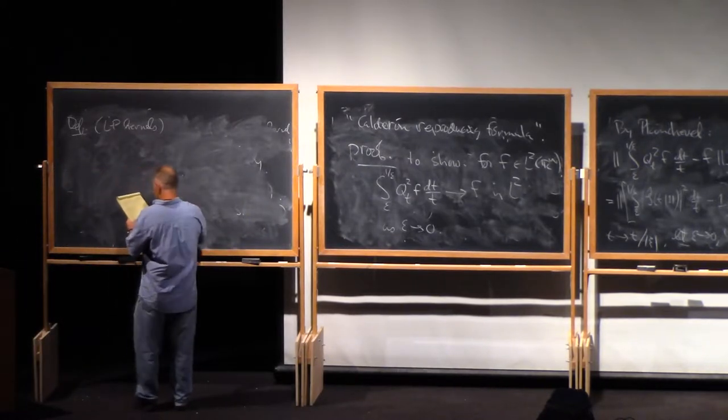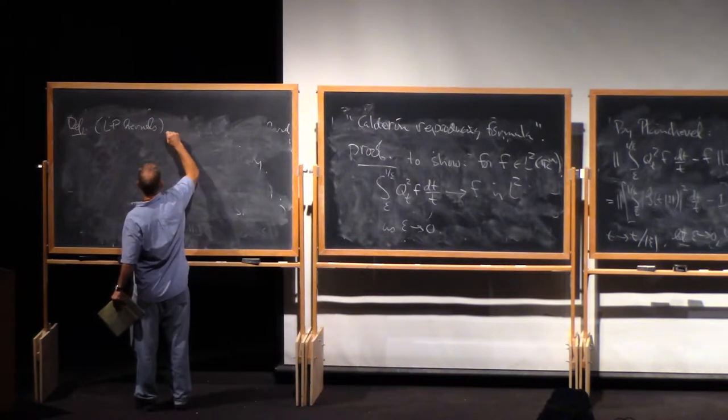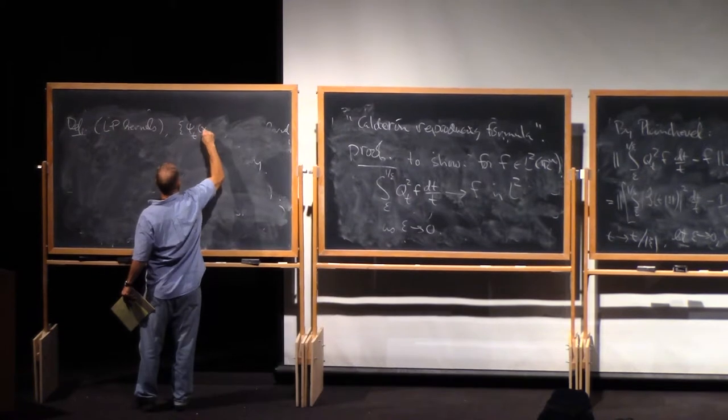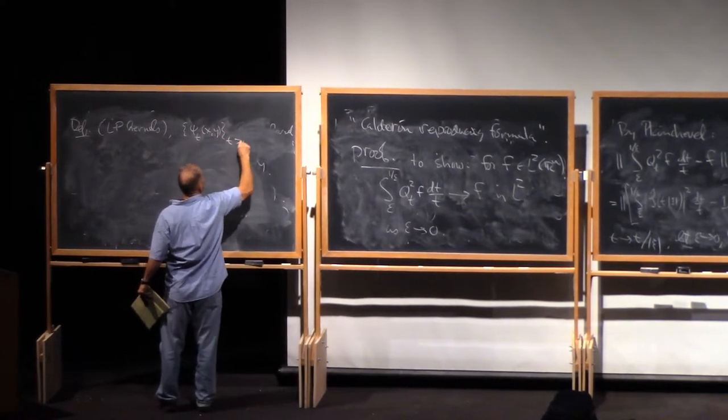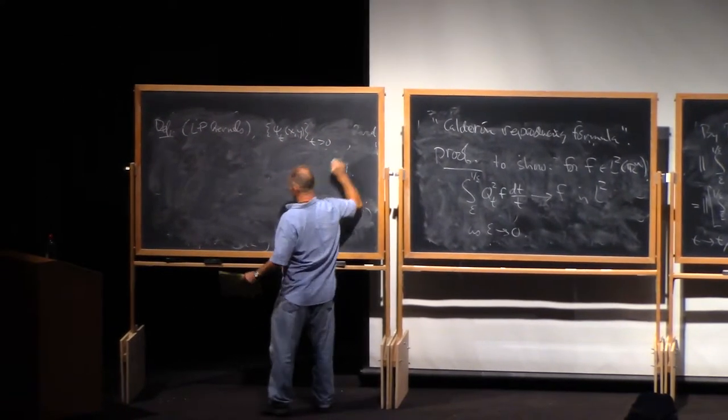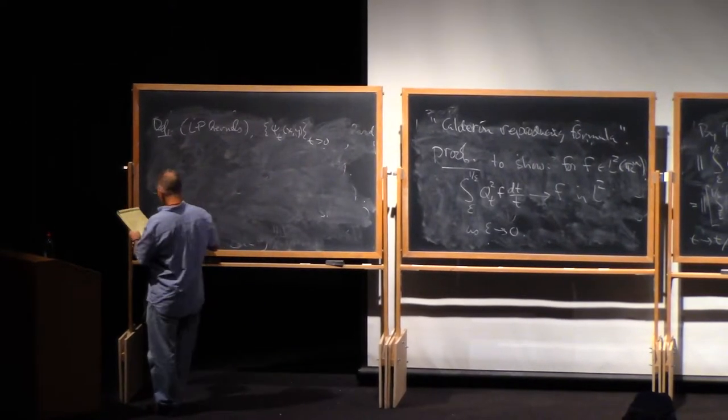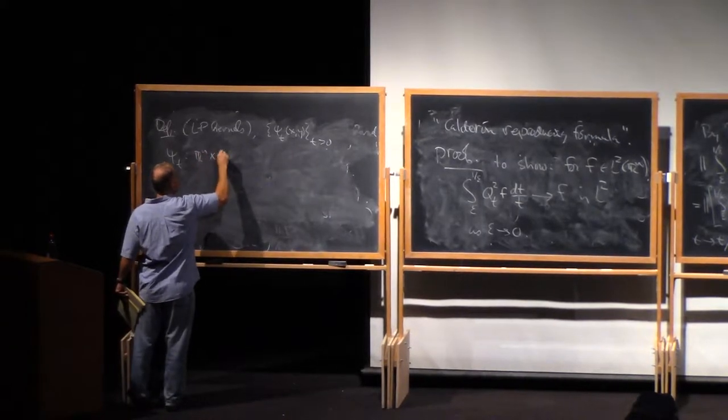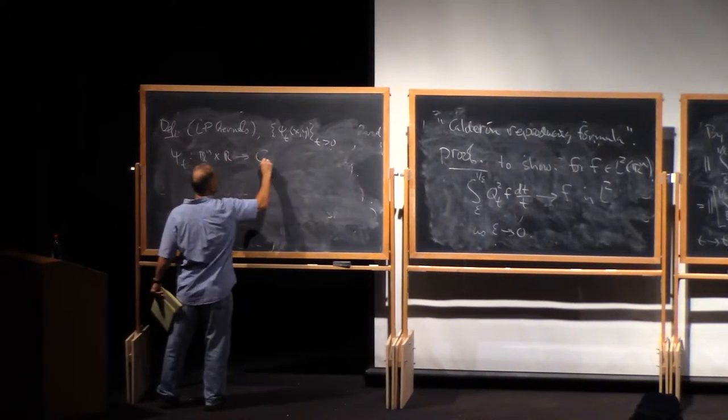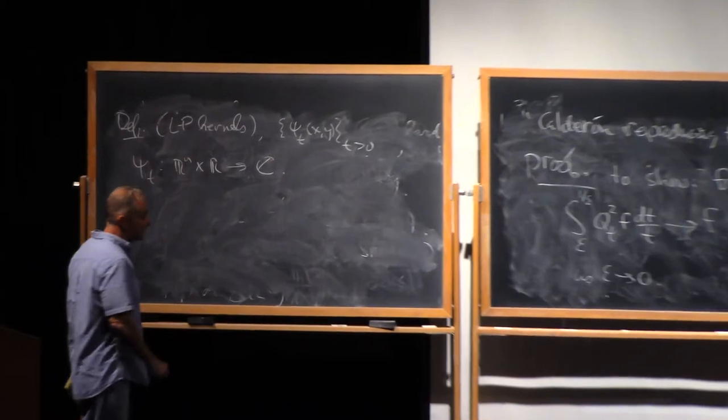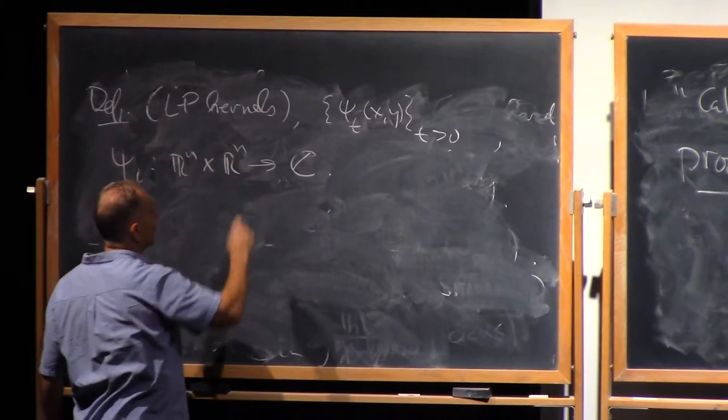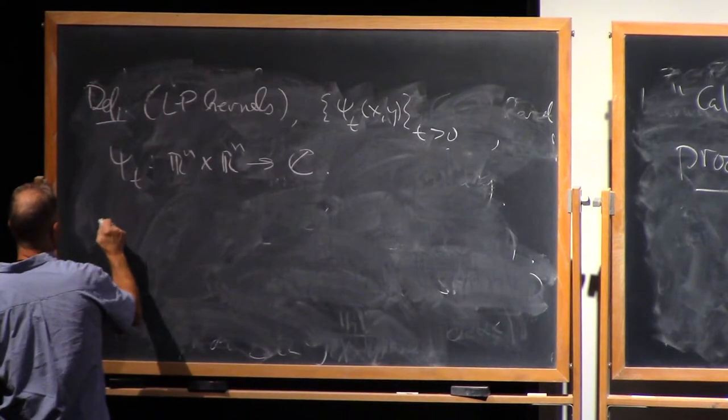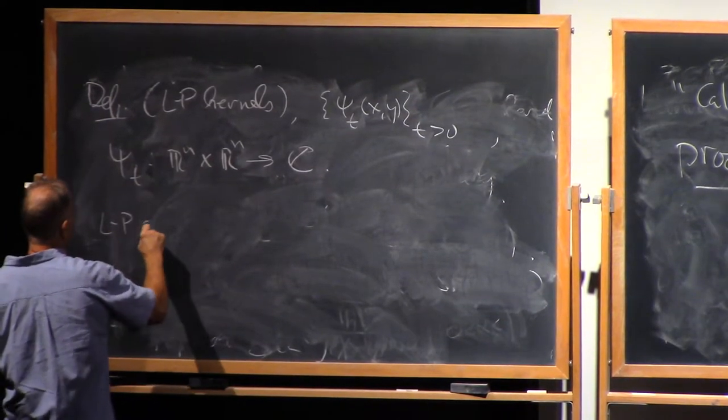So, we're gonna be talking about a family of operators, or family of kernels, psi_t of xy, indexed by some positive parameter t. Psi_t is gonna map Rn cross Rn into the complex numbers. And we're gonna assume that we have the following two conditions. There's a Littlewood-Paley size condition.